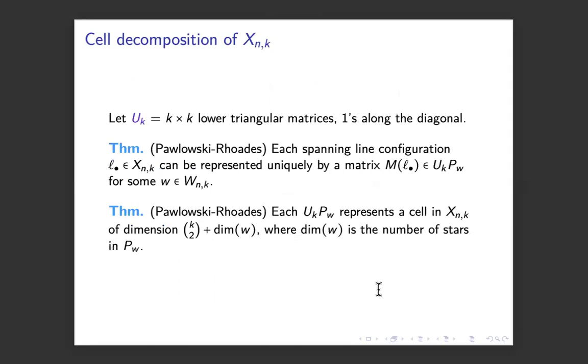How do we get all of the spanning line configurations in X_{n,k}? Let U_k be the k by k lower triangular matrices with ones along the diagonal. The theorem is that every spanning line configuration in X_{n,k} can be represented uniquely by a matrix coming from a lower triangular matrix with ones on the diagonal times something in a pattern matrix for some Fubini word W in W_{n,k}. That's a factorization. It's nice because once you have a canonical form, we needed that, we use that all the time in Schubert variety land too.